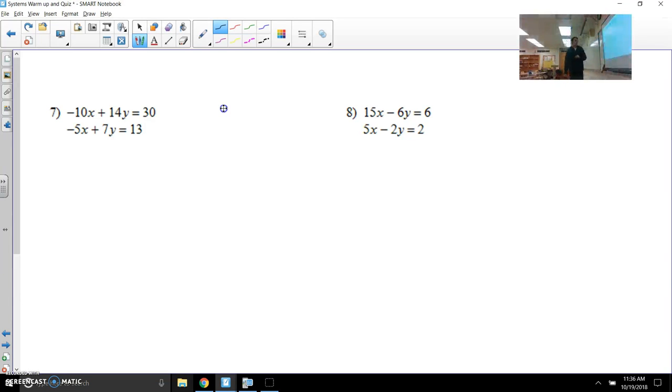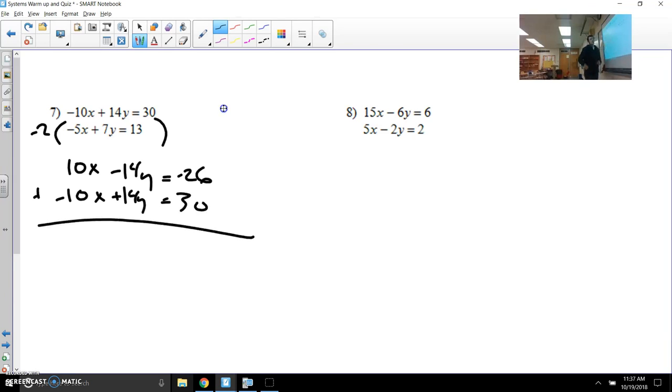As we start looking at ones that aren't multiple choice, you need to start thinking along those lines that I was just talking about. How can we make some of these match? And they need to be opposite in sign. For example, if I see that this is 14, I really need to multiply something that makes this second equation a negative 14y. So let's multiply everything by negative 2. Once you multiply everything by negative 2, everything has to be multiplied. Then, rewrite the other one down here and add them two equations together.